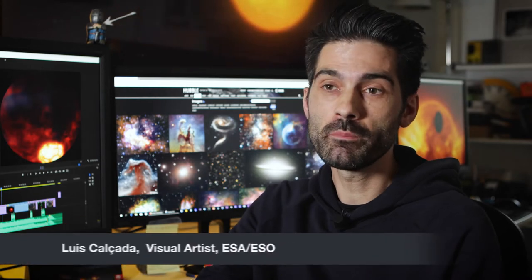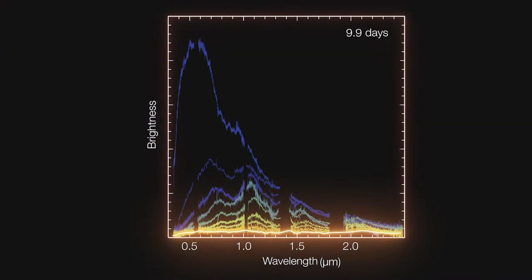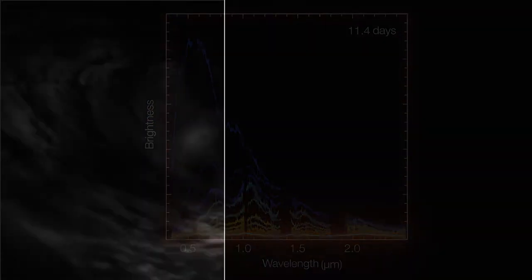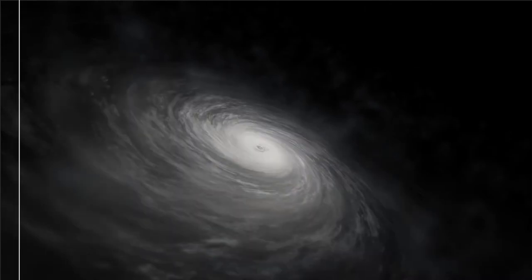Hubble is a fantastic telescope, but it cannot observe everything. So it collects a lot of data in the form of spectra, for example, something which is not exactly a real image. That's why we need to step in and create these illustrations and animations.